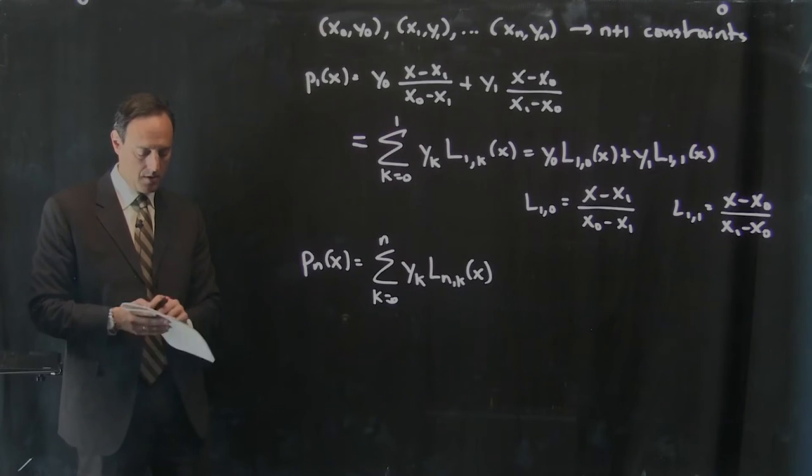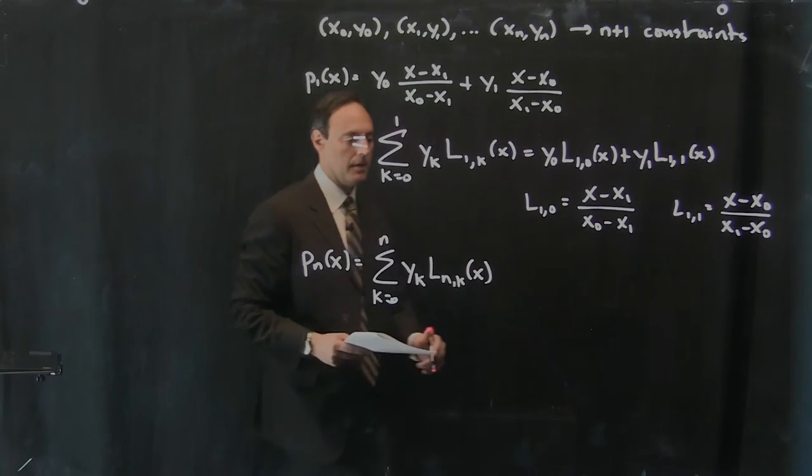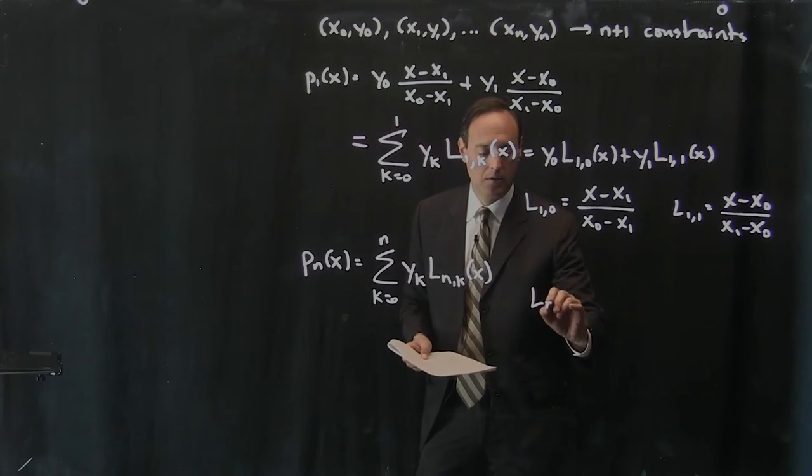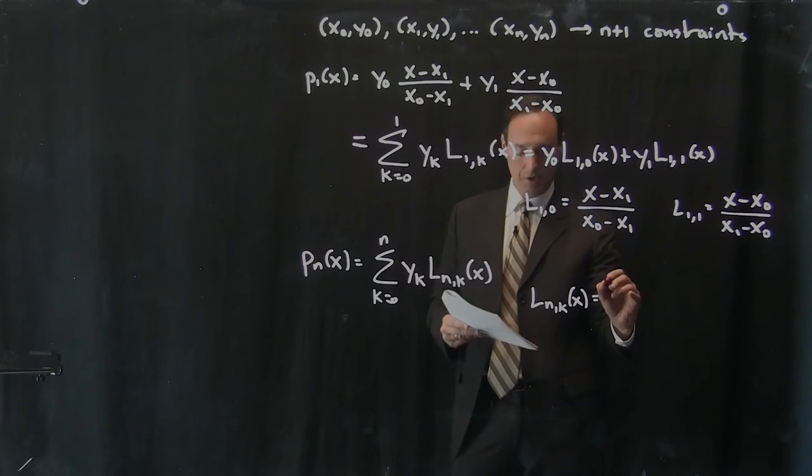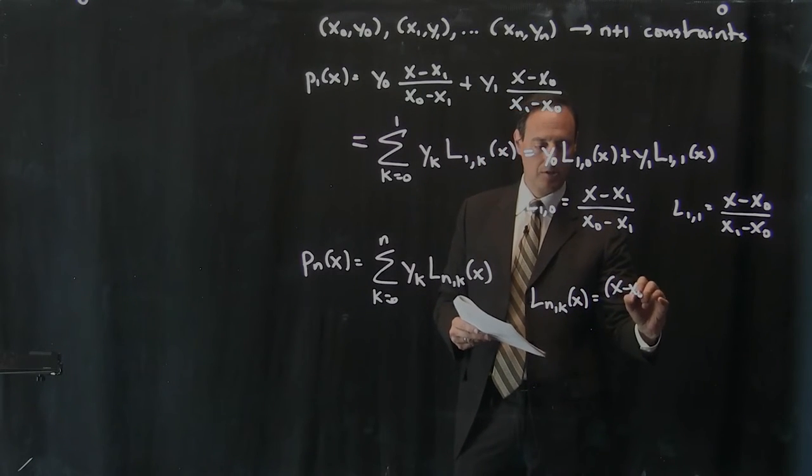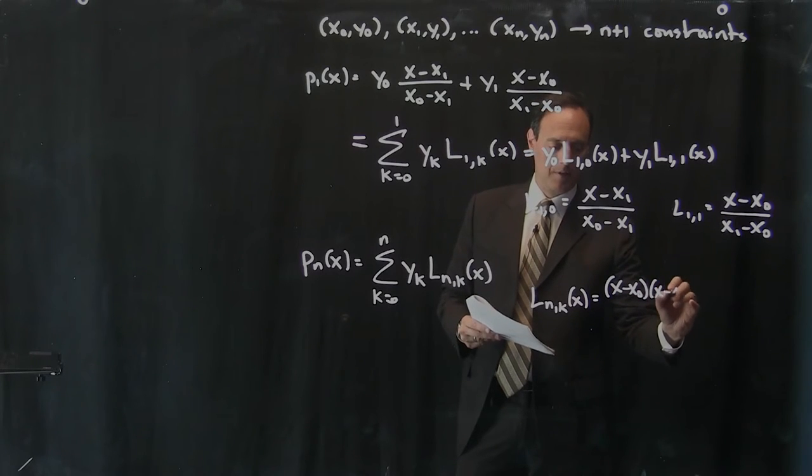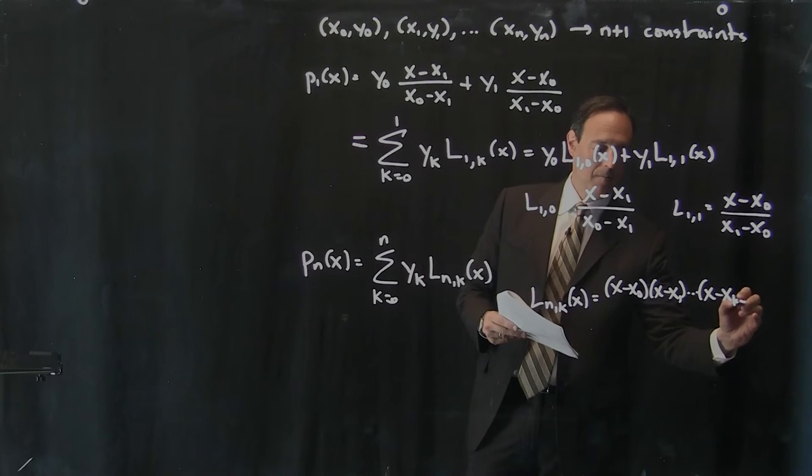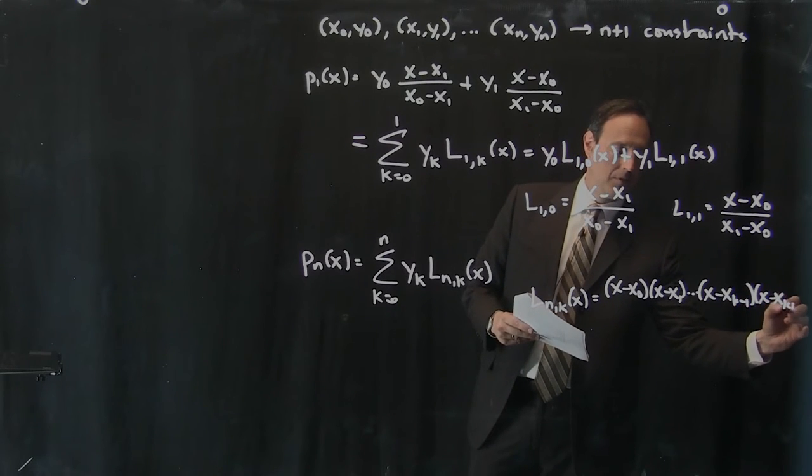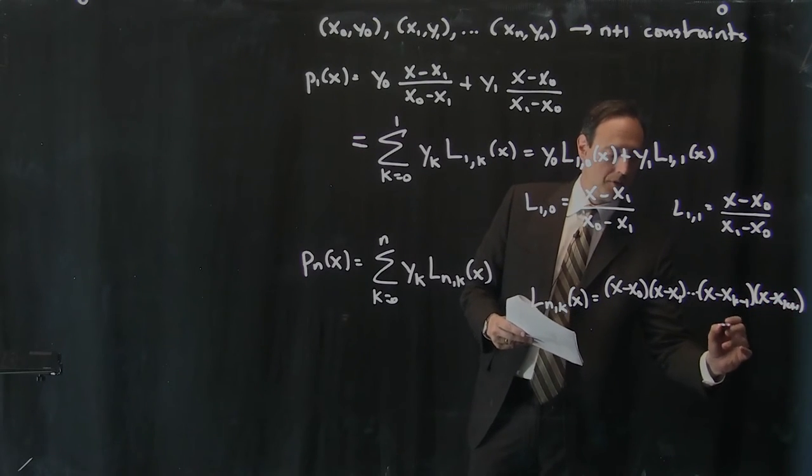And then the only thing I have to do is define this L of n, which is now much bigger. It's x minus x naught, x minus x1, x minus xk minus 1, x minus xk plus 1, dot dot dot, all the way up to x minus x of n.